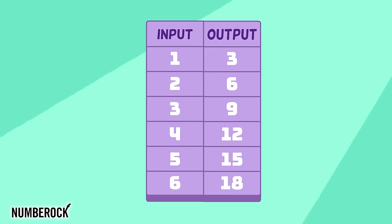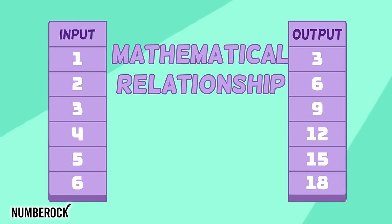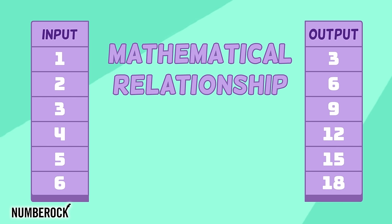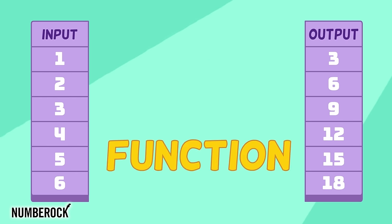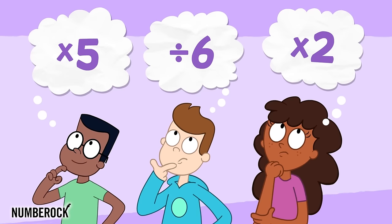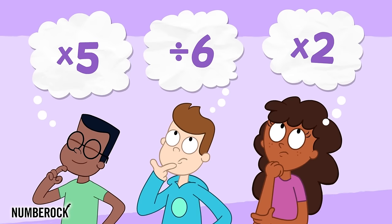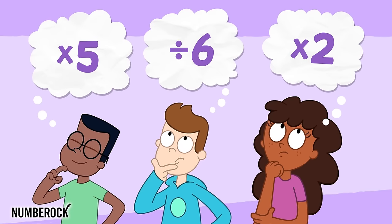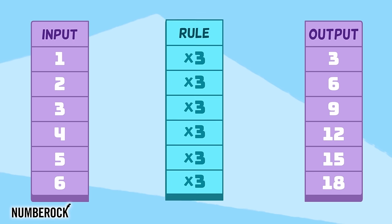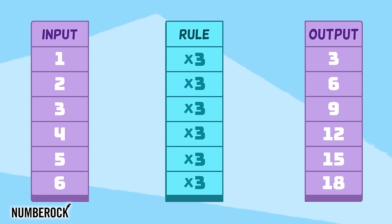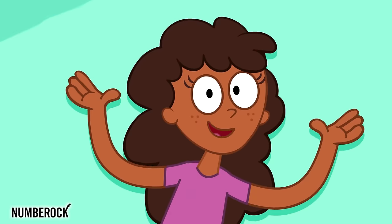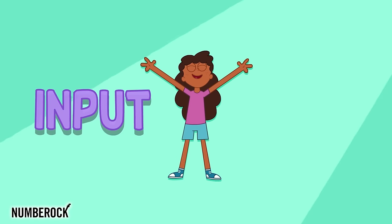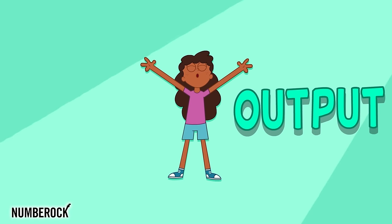When there are two sets of values and they share a mathematical relationship of functions there, we can use our mind — our mathematical tool — to find and describe a relationship called a rule. What's happening between the in and the out?